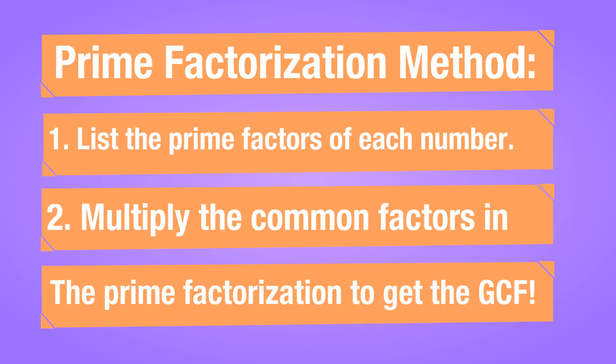The prime factorization method: first, we list the prime factorization of each number. Second, we multiply the common factors in the prime factorization of both numbers to get the greatest common factor, or the GCF.